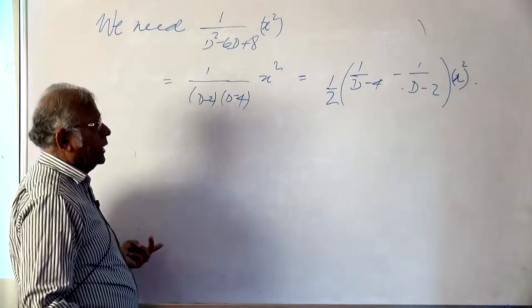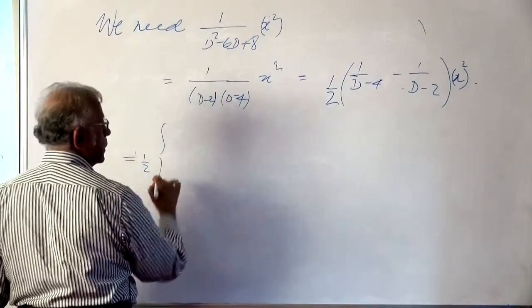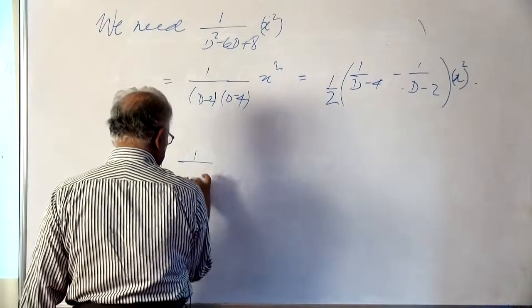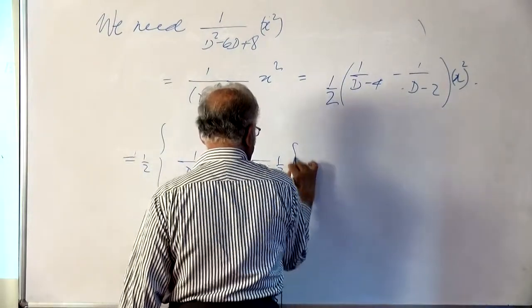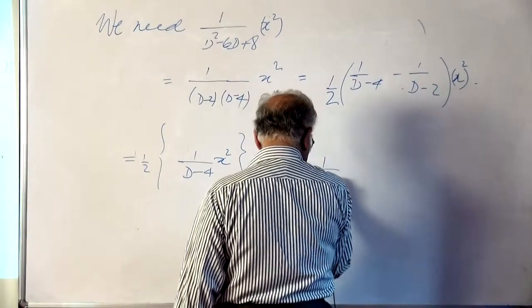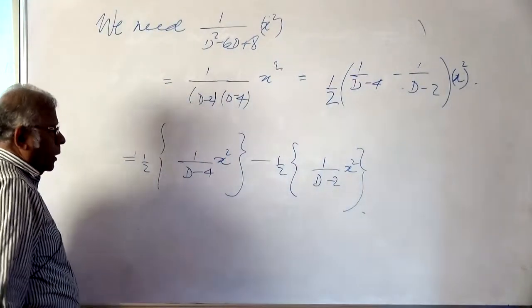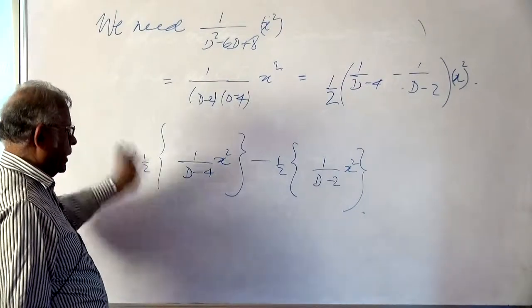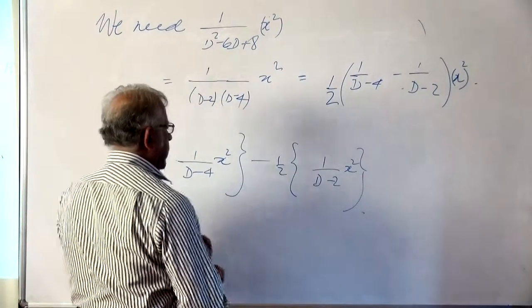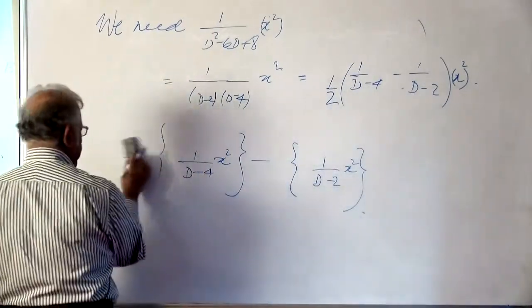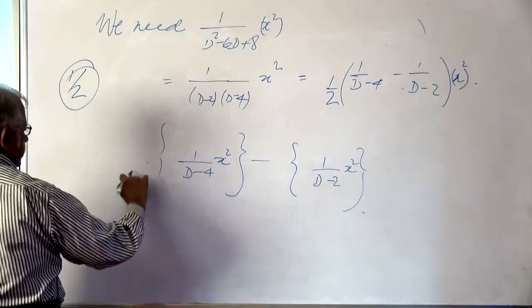So this fellow now has to operate on x². We will do it in steps. We will write this as half times [1/(d-4) operating on x² minus 1/(d-2) operating on x²]. We will do these one by one. The half is common so we can remove it and take care of it later. Whatever we get from this operation will have to be halved.